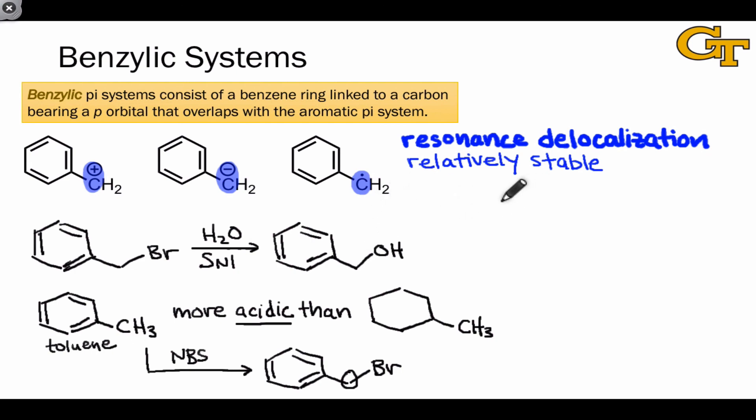All three of these examples are meant to highlight the relative stability of benzylic pi systems, be they cations, anions, or radicals. And you should keep in mind benzylic carbons as relatively activated positions that are susceptible to reactivity in certain situations.